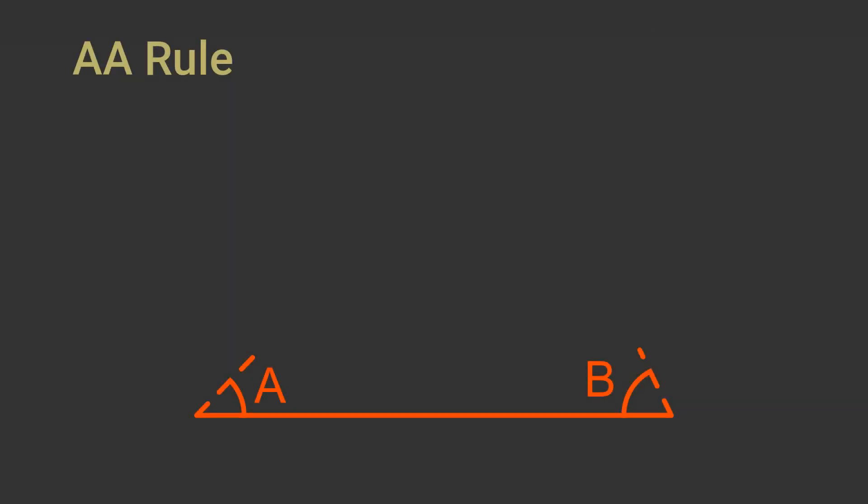We could check for similarity by comparing every side and every angle. That would work but it is unnecessary. In fact we only need to check that both triangles have two angles that are the same and that means that the two triangles must be similar. This is called the AA rule. It works because when we choose two angles of a triangle the shape is fixed. We can change the size but we can't change the shape without changing the angles.